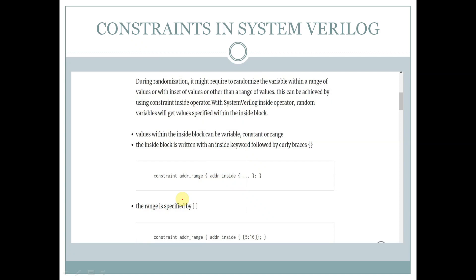Hello all, welcome to my YouTube channel. In this video we are going to discuss about constraints in SystemVerilog. During randomization by using the random keyword we can generate any random values, but with the help of constraints we can generate meaningful random values.